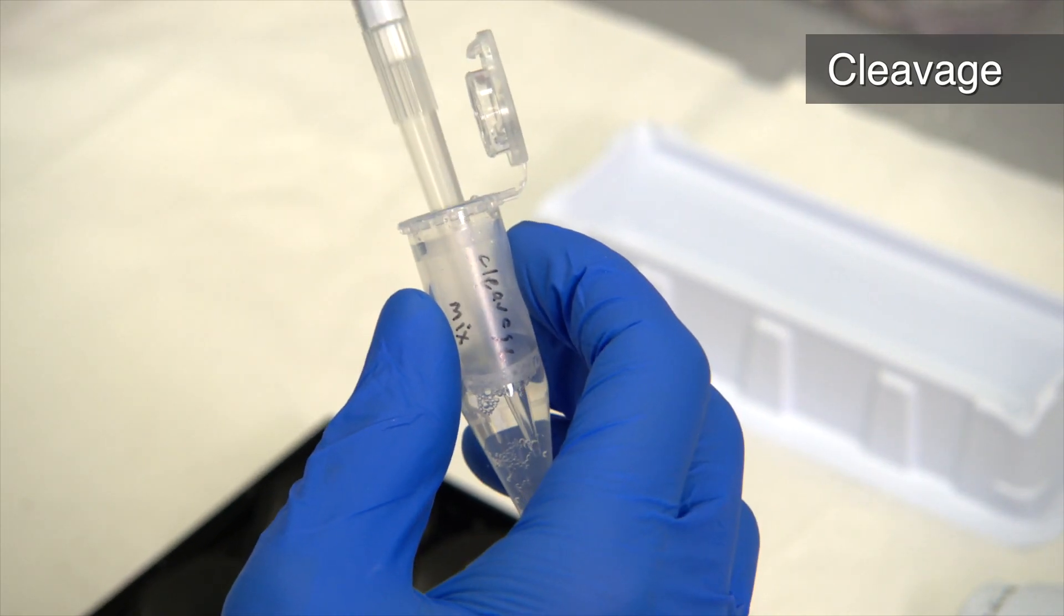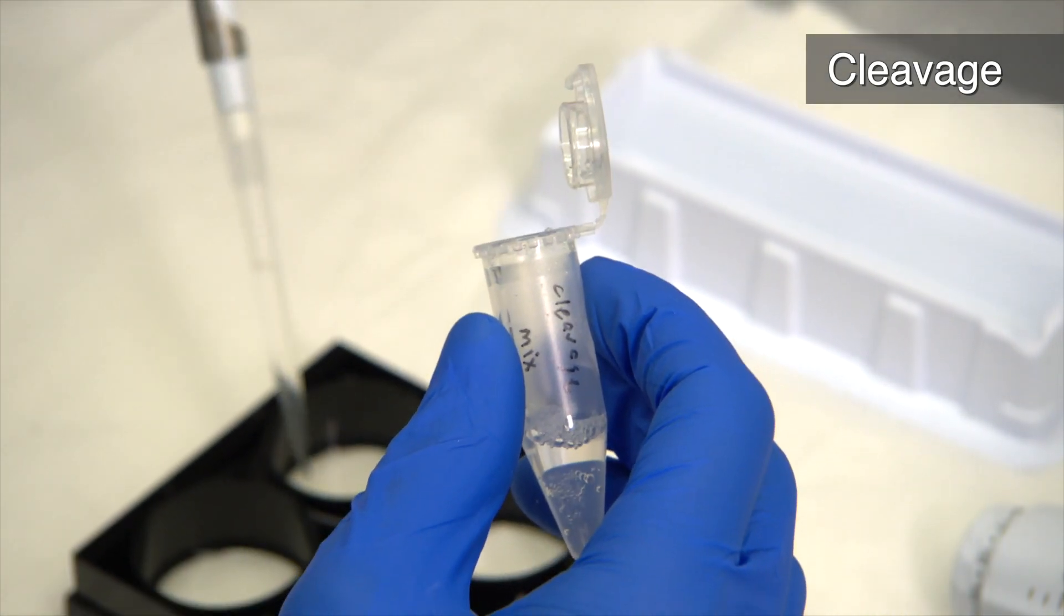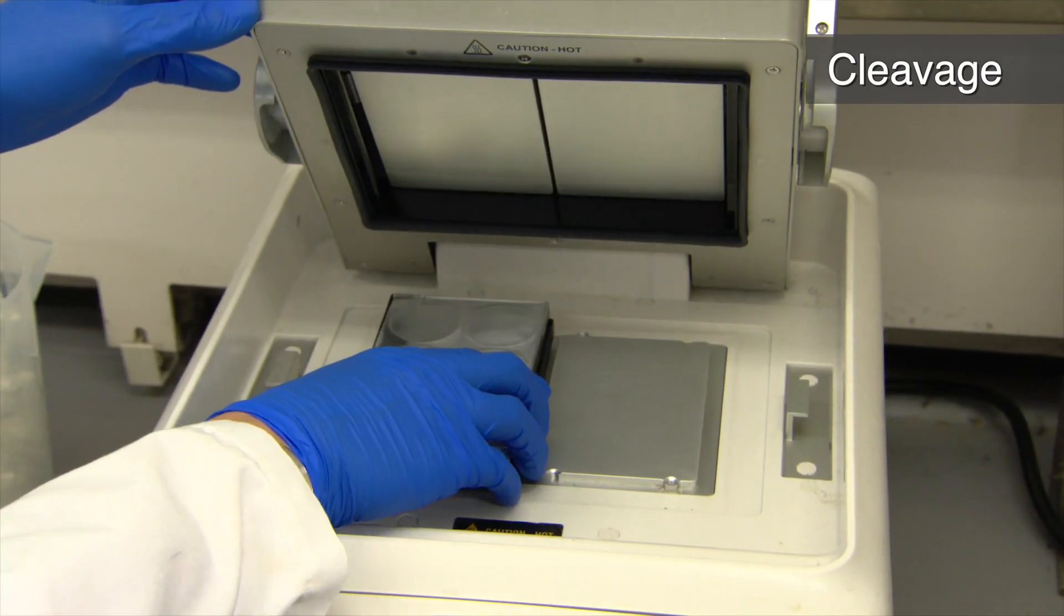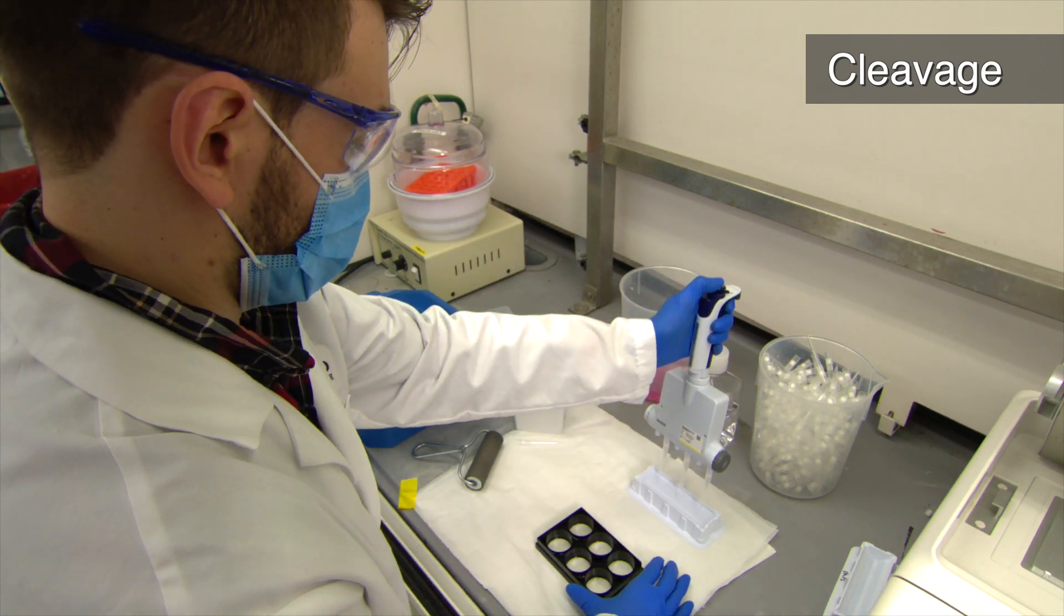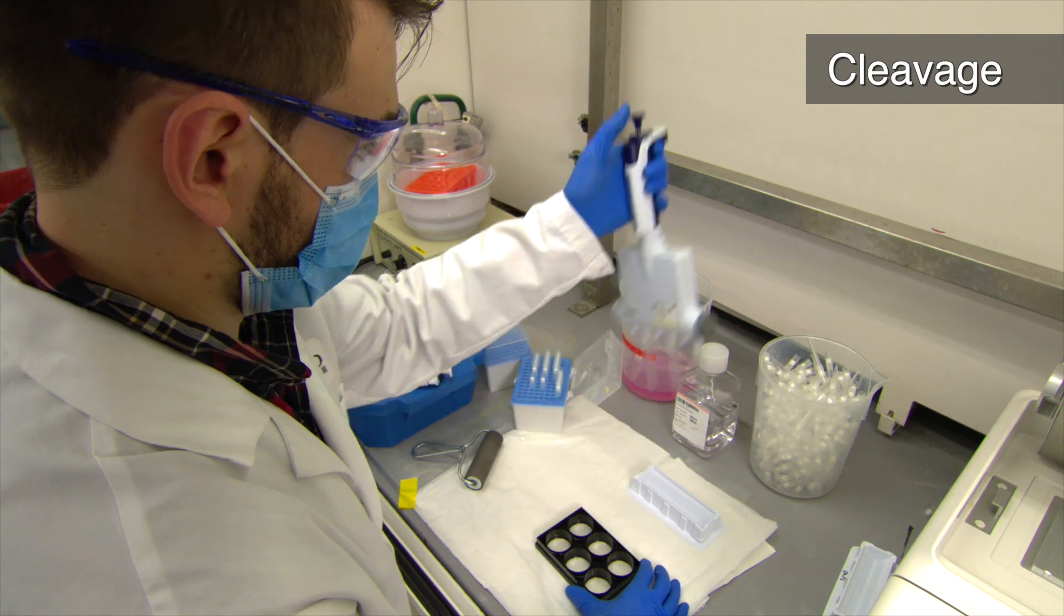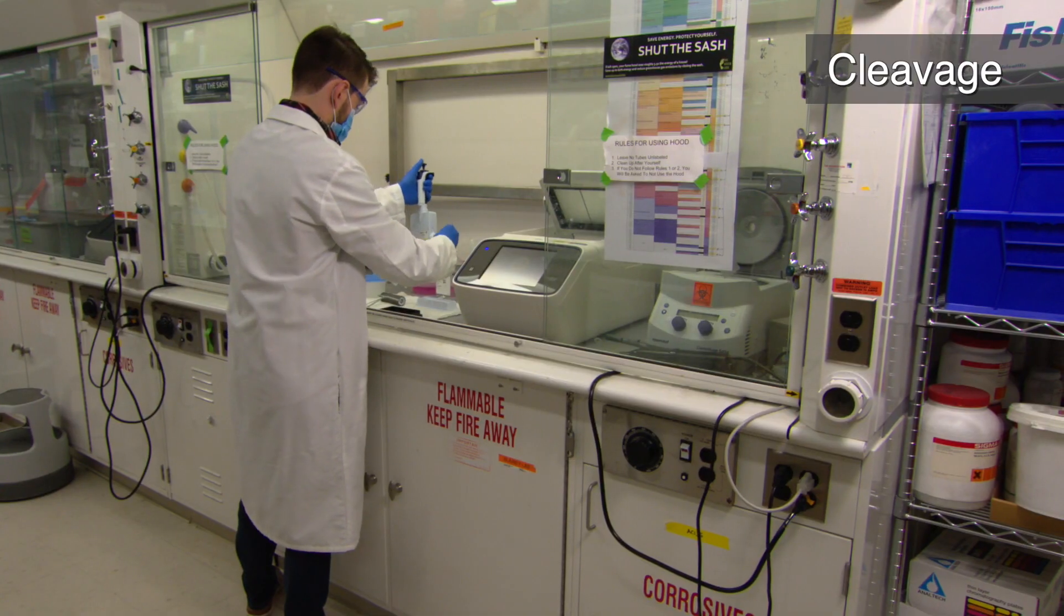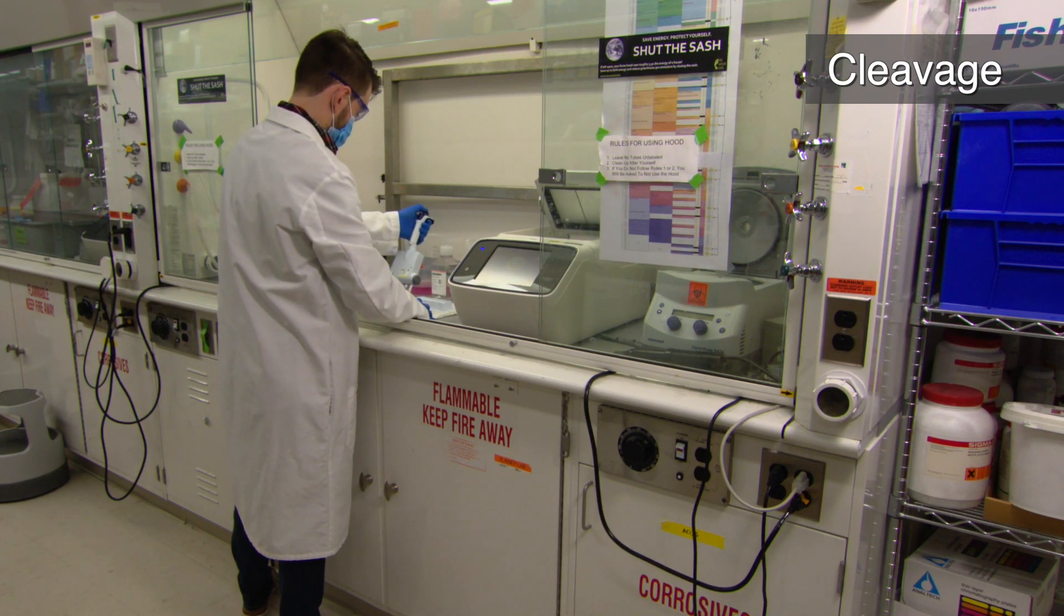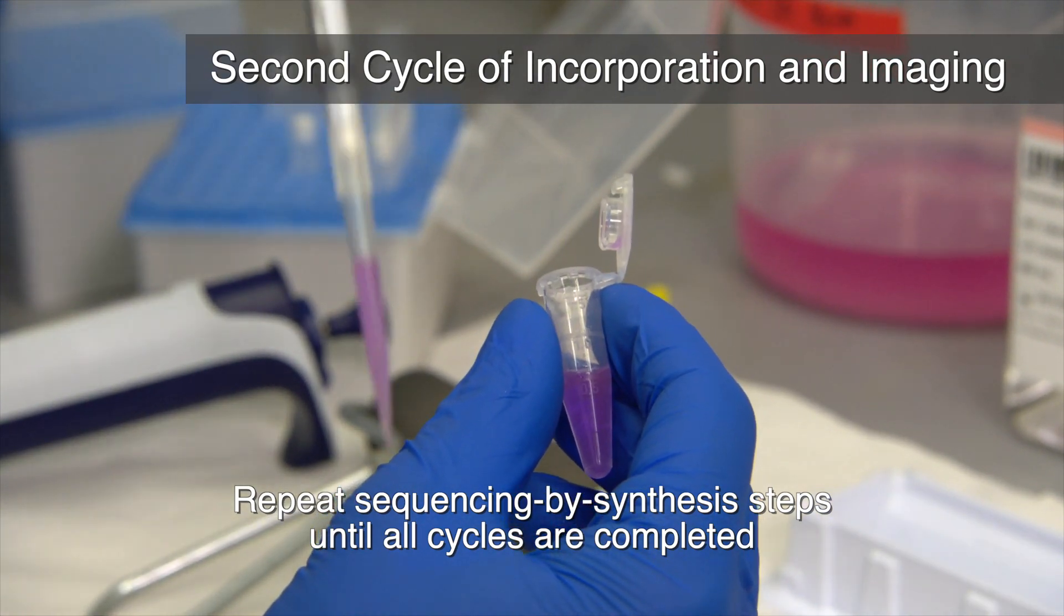Next, prepare the sample for the second cycle of sequencing. First, exchange DAPI for 500 microliters of Illumina cleavage mix and incubate at 60C for 6 minutes. Wash 3 times with 1 milliliter PR-2 at room temperature. Then, wash 3 times with 1 milliliter PR-2 at 60C for 1 minute each. Do 3 additional washes with 1 milliliter PR-2 at room temperature for 1 minute each. Finally, incorporate the next nucleotide position as before and image.